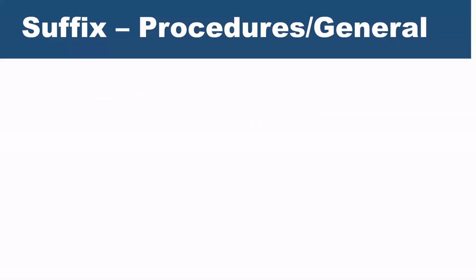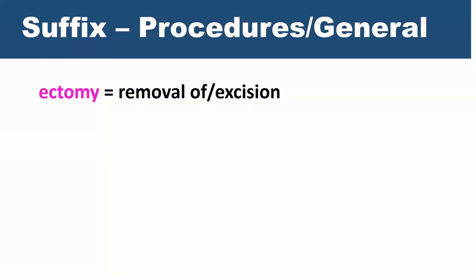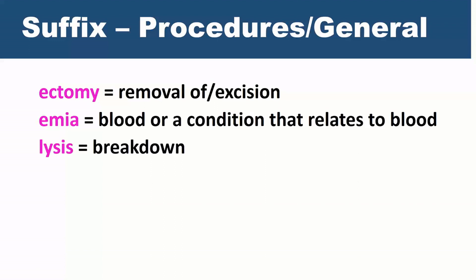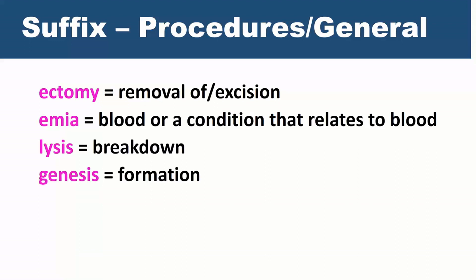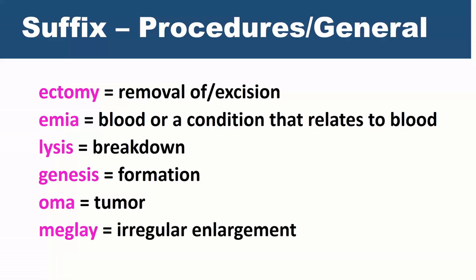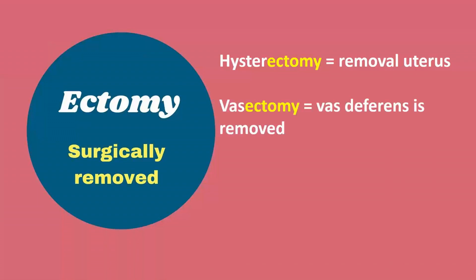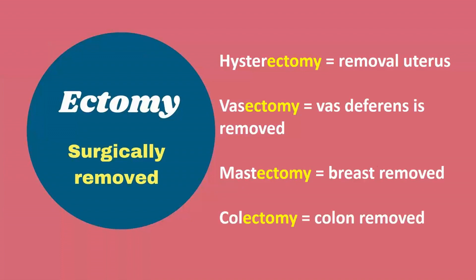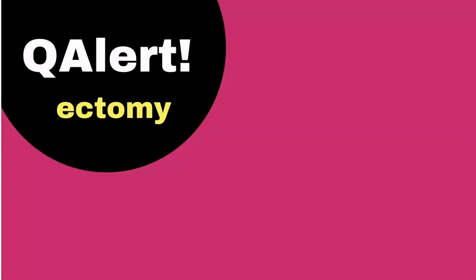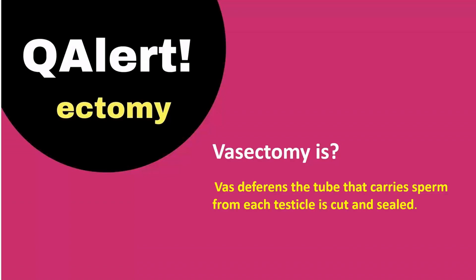Suffixes for procedures: ectomy means removal or excision of a specific organ. Emia means in the blood. Lysis is breakdown. Genesis means formation. Oma means tumor. Megaly means irregular enlargement. Example of ectomy: hysterectomy is removal of the uterus, vasectomy is cutting and sealing the vas deferens, mastectomy is breast removal, colectomy is colon removal.